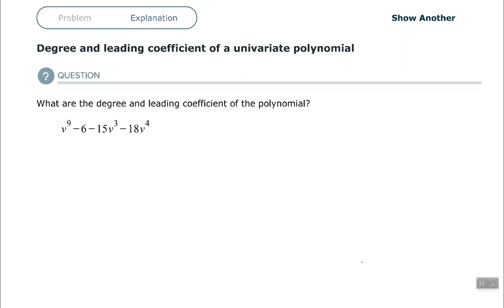The first thing you want to do is to write the polynomial in descending variable order, which means you want to write the terms in order from the highest exponent to the lowest exponent.